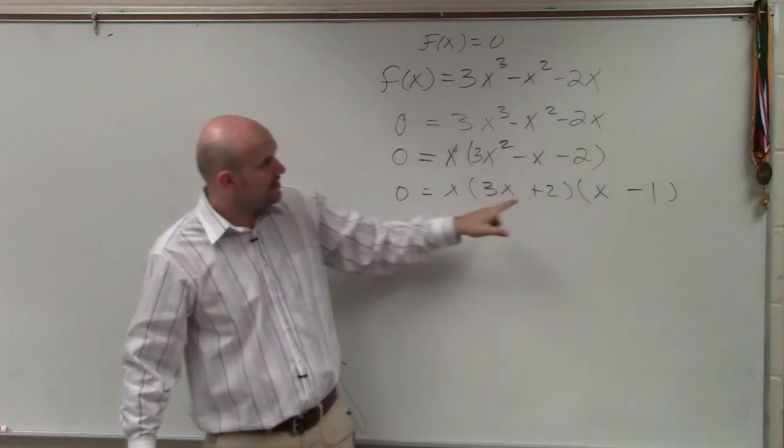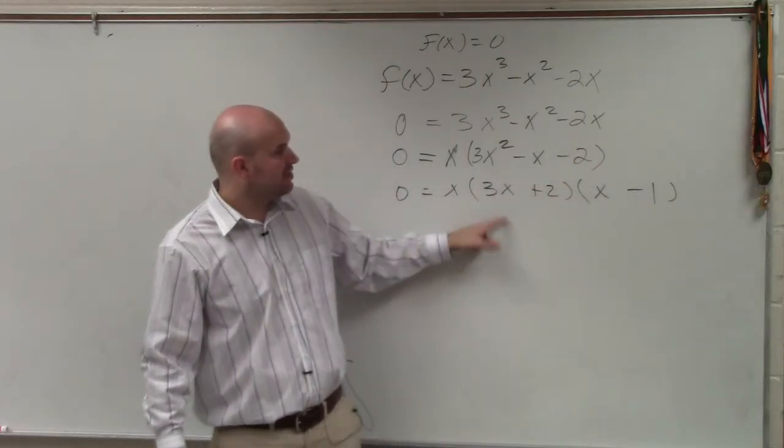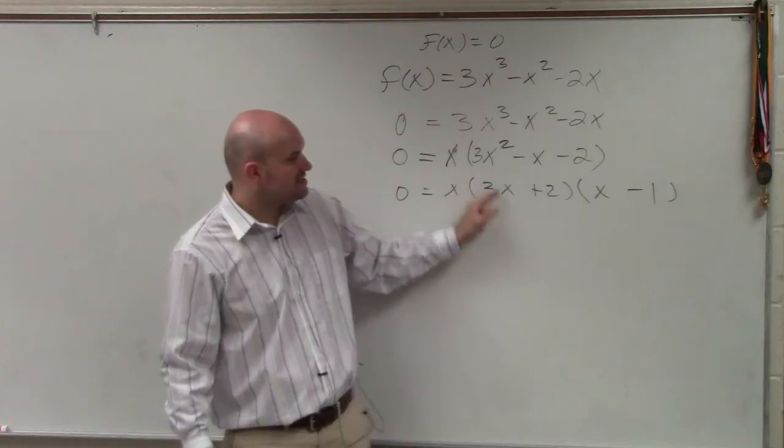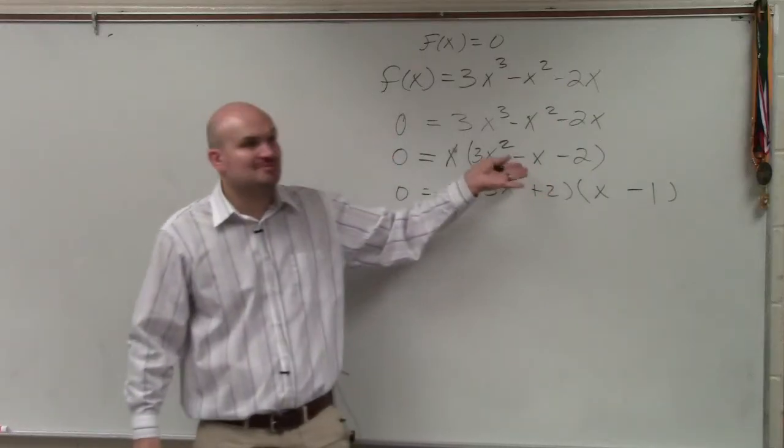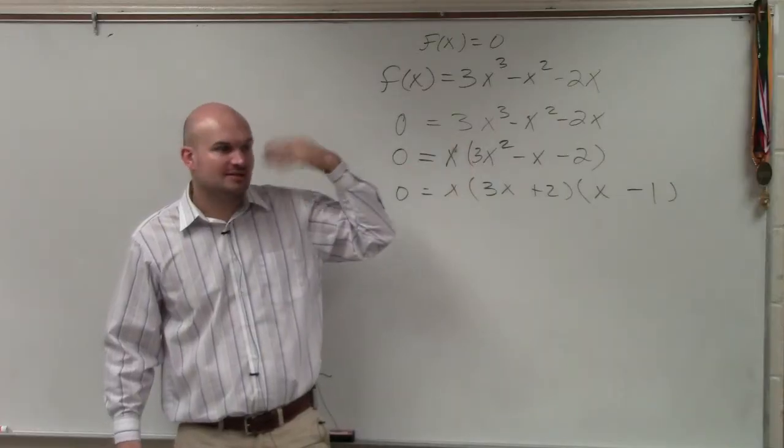3x times x is 3x squared. 2 times negative 1 is negative 2. 2x plus 2 times x, plus 3x times negative x gives me a negative x. Does everybody see how I did that? Just practicing doing that in my head.